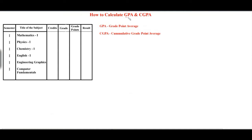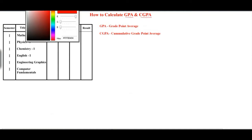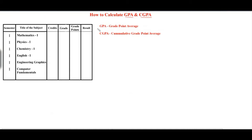In this video, we are going to see how to calculate your GPA and CGPA. Most students do not know how to calculate their GPA and CGPA. GPA stands for grade point average and CGPA stands for cumulative grade point average. GPA is sometimes called SGPA and is calculated for only a single semester, while cumulative grade point average requires more than one semester's data.